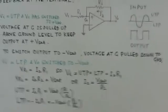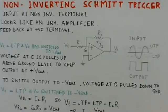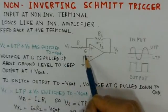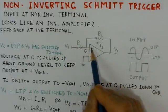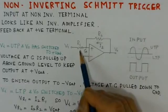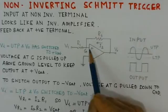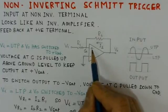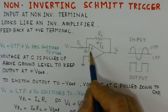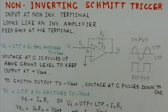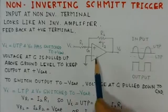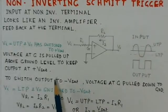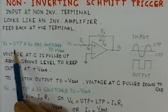Now we will look at the non-inverting Schmitt trigger. Here the input is at the non-inverting terminal, which is why it is called the non-inverting Schmitt trigger. At first sight this circuit looks like an inverting amplifier, but notice carefully that the feedback is at the positive terminal, while in a normal inverting amplifier it is at the negative terminal — so you must distinguish between the two.